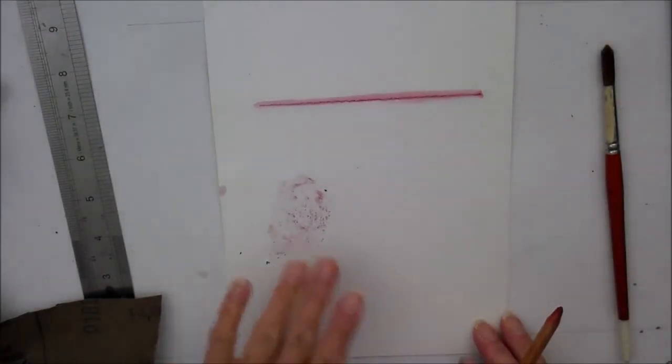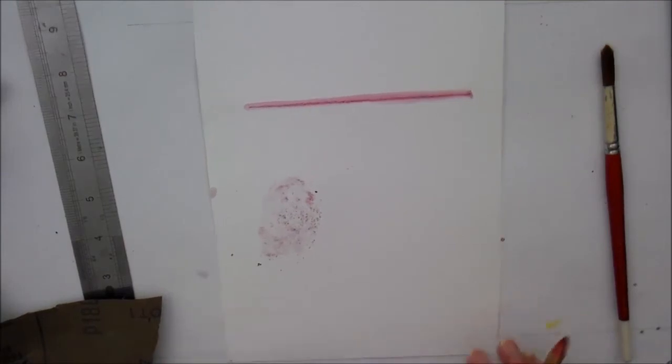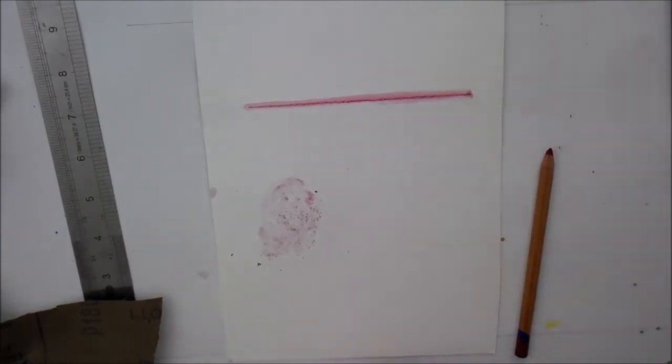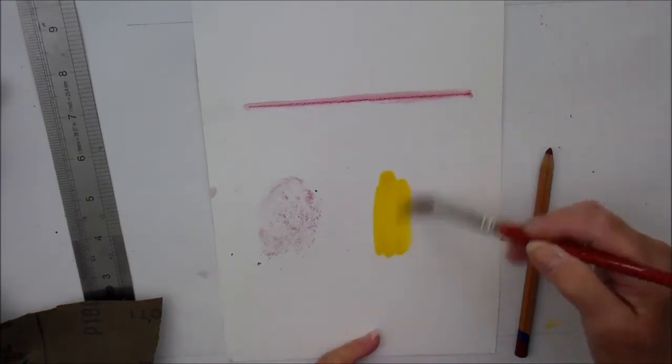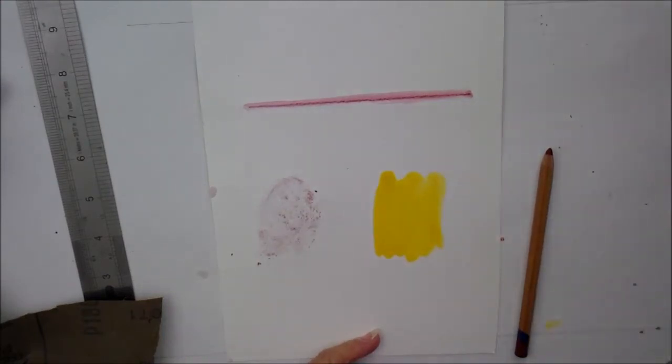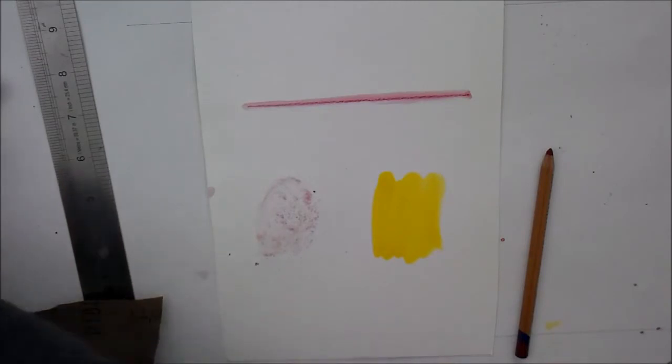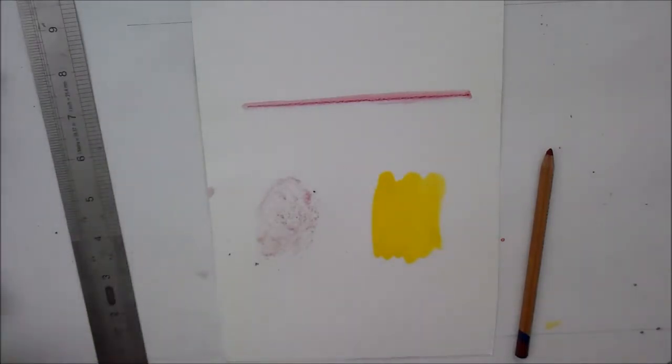And of course, depending how wet or dry the pigment is, whether it's a very wet puddle, it'll spread more. So you can also have interesting effects. Let's have a splash of yellow. And let's just take a dark blue.